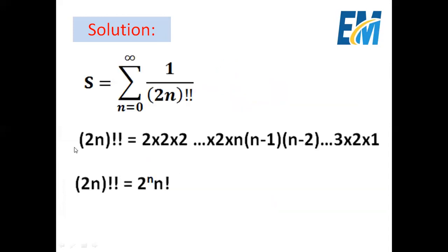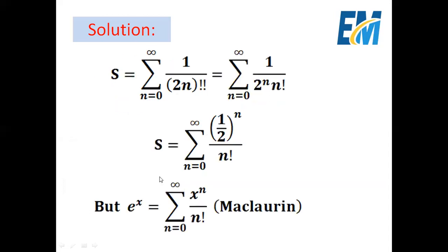So (2n)!! equals 2 to the power n multiplied by n factorial. Therefore s equals 2 times the summation from n equals 0 to infinity of 1 over 2^n times n factorial.